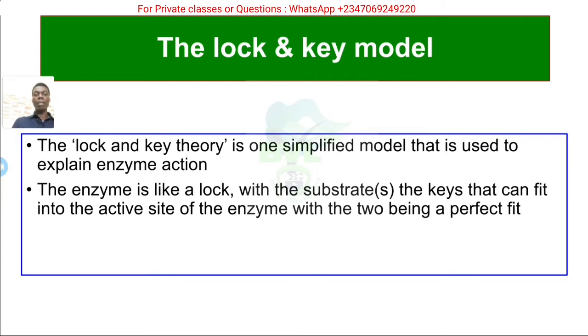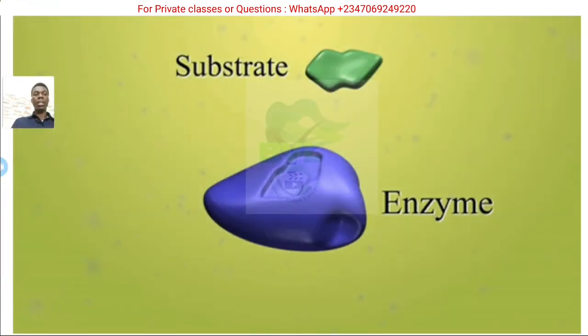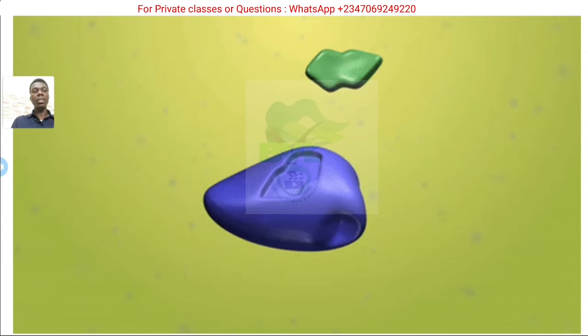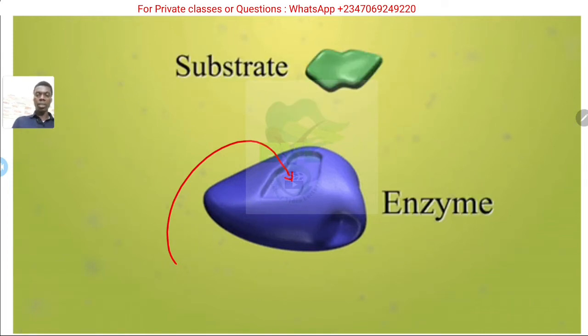The enzyme is the lock. So, like you have a key with a key hole as a lock, then the key is the substrate there. So, it fits in just the way you have something like this. So, this active site here is the lock. The substrate that bounded to it is the key.